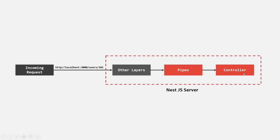In the controller, we are expecting a numeric ID, not a string value. But when we read the ID from the route parameter, it is read as a string. So the pipe will take care of converting that string ID to a numeric type before the request reaches the controller. Now, if this value — say we are passing ABC as the ID value — that string cannot be converted to a number type. In that case, when the request reaches the pipe, it will try to convert the string to a number. Since it cannot, the pipe will immediately throw an exception, and a response will be sent back to the client with a status code of bad request.